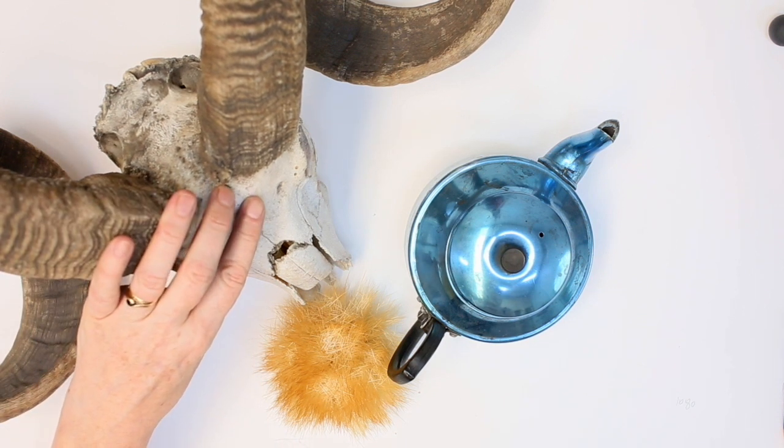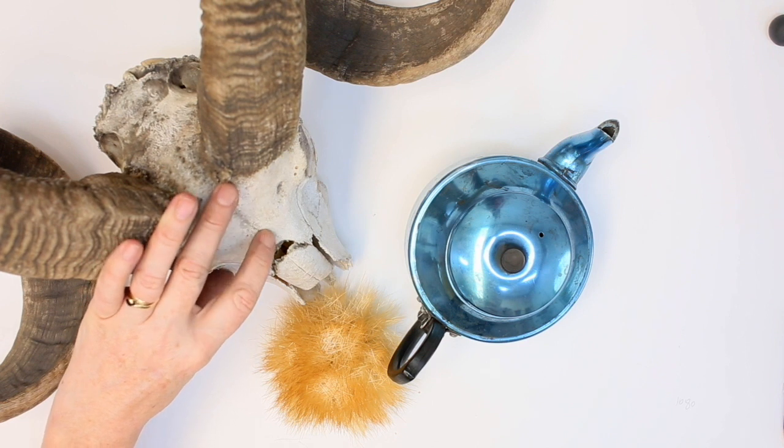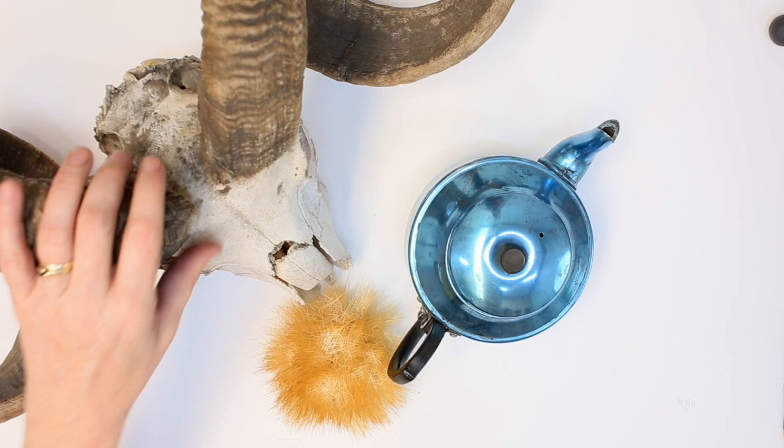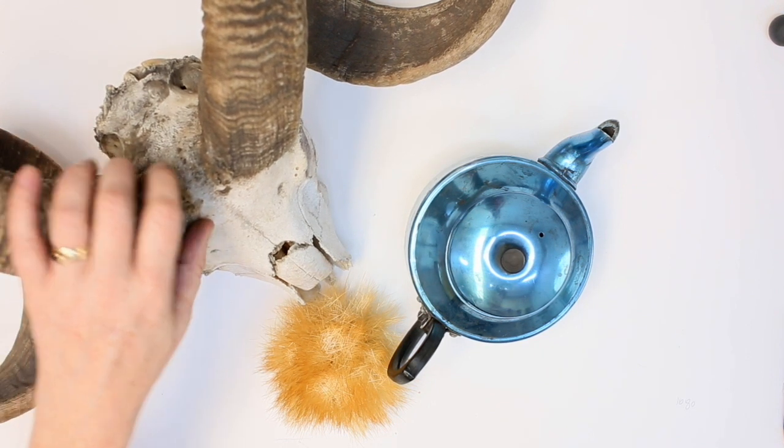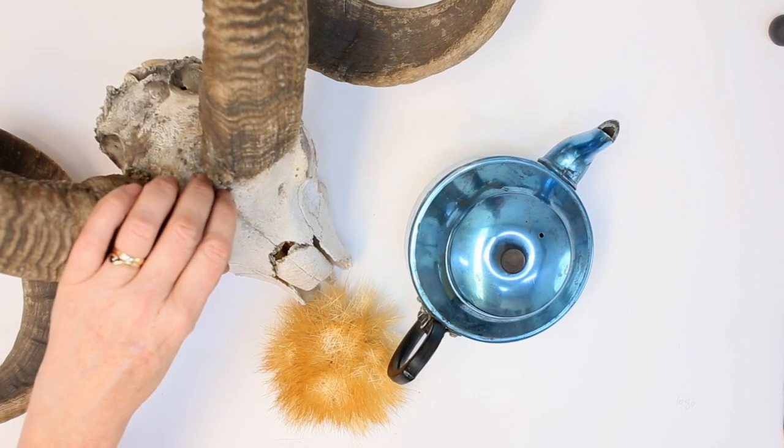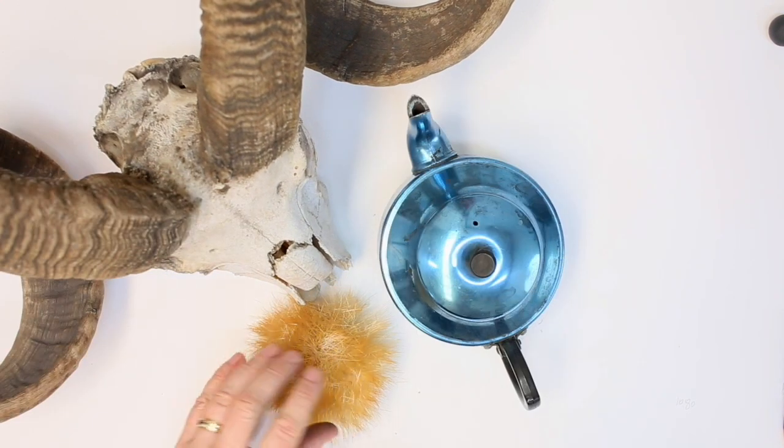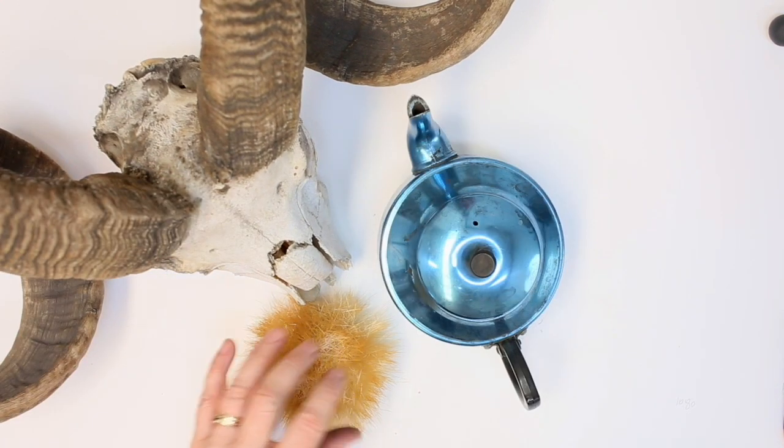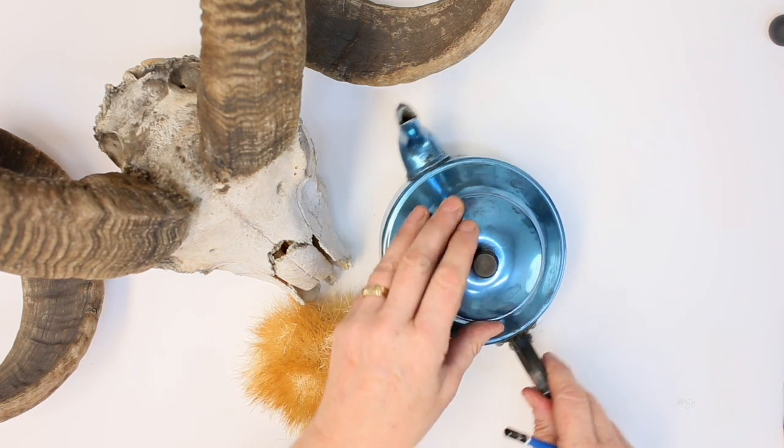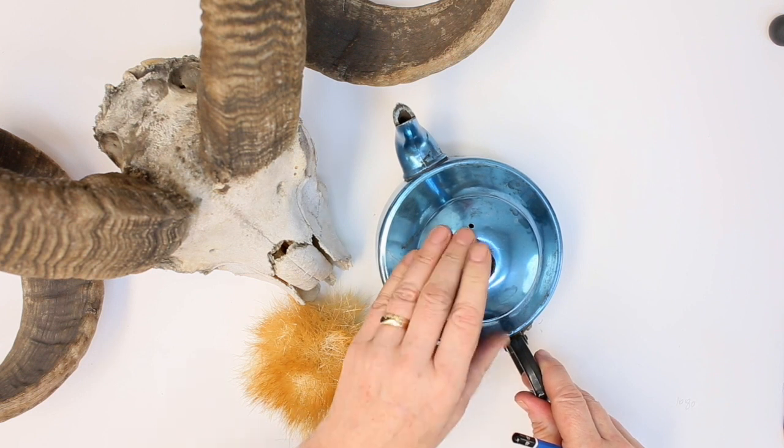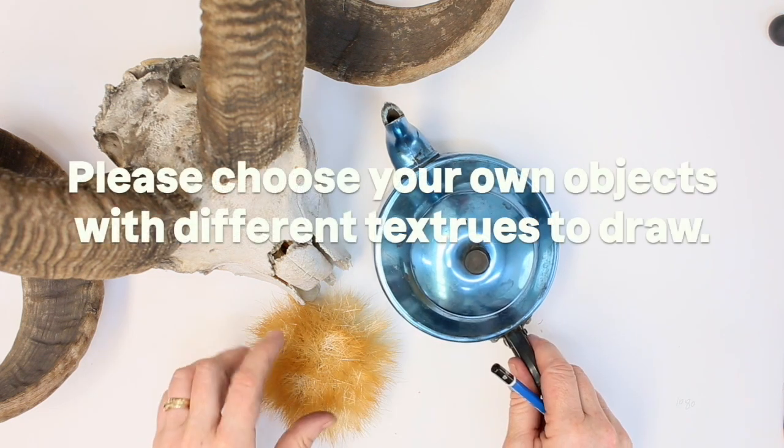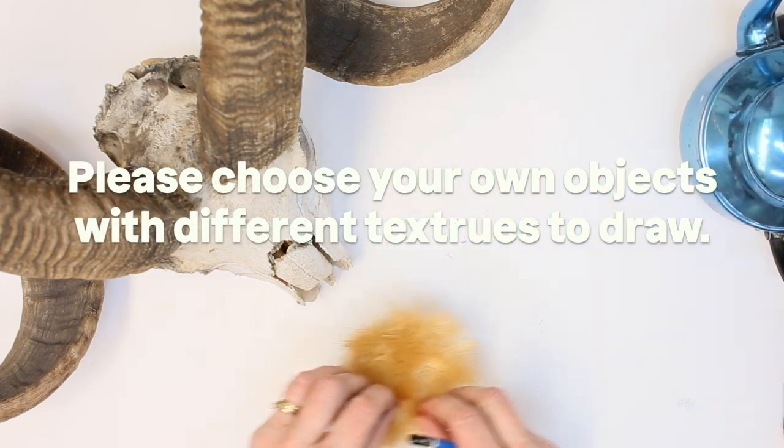We're going to start with a group of objects that all have a very different texture. What we have here is a beautiful ram skull that is a favorite drawing prop of mine, a dried thistle head, and this sweet little retro teapot that has a very shiny smooth surface. I'm just going to move these out of the way first.